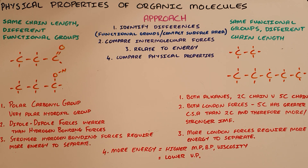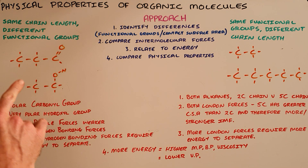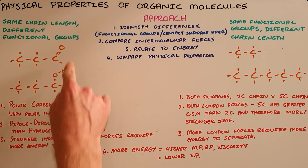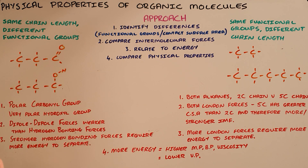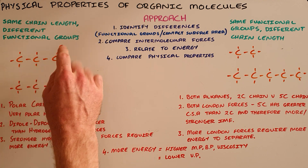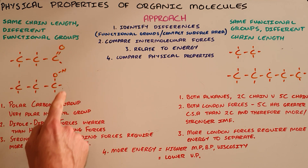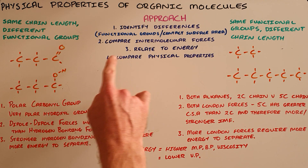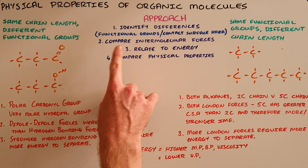There are largely two categories in which these questions happen. The first is where you are given two or more molecules that have the same chain length but different functional groups. We have an example here of an aldehyde that has a carbonyl group on it and an alcohol that has a hydroxyl group on it, and we can see how we go through this approach.